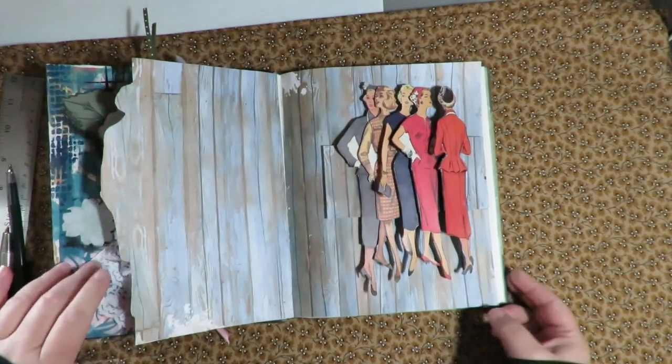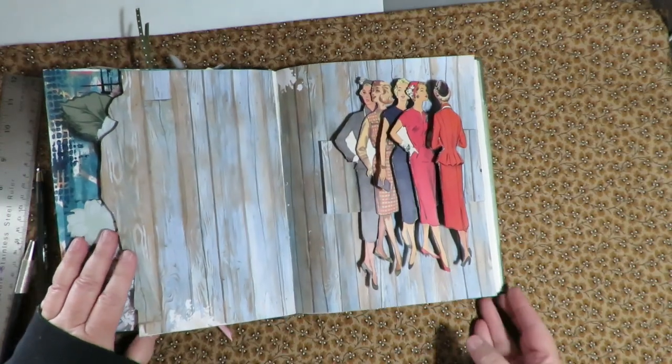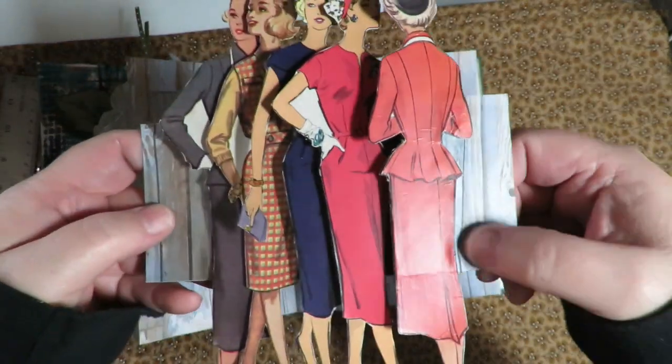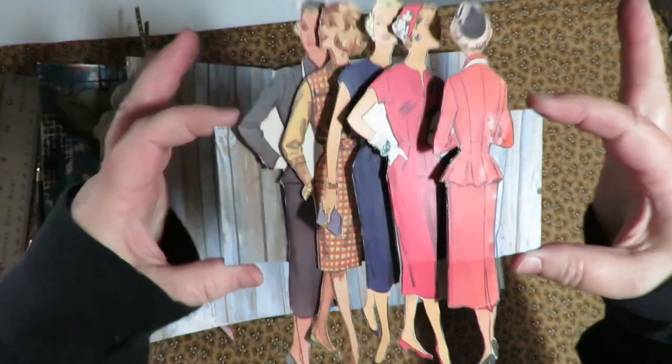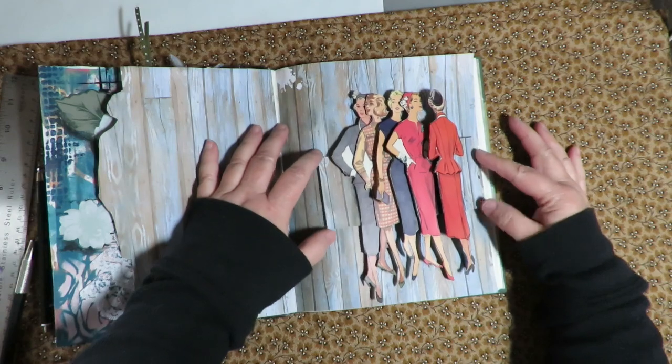So I covered my background with my scrapbook paper that looks like wood. And then I put some over this end and over this end underneath that girl so that it blends in. I can put these down on the page and it'll blend in.